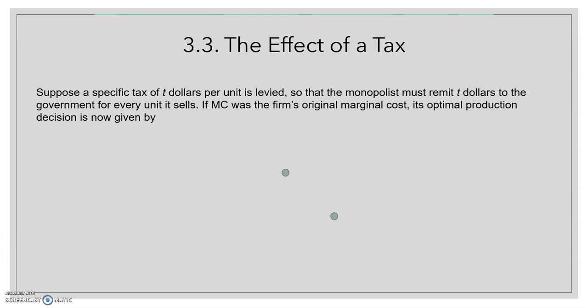Just to begin, suppose we have a specific tax of $3 per unit, so that the monopolist must remit $3 to the government for every unit it sells. If the marginal cost was the firm's original marginal cost, its optimal decision will be given as it is shown in this slide.